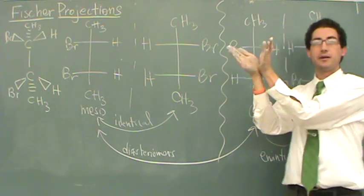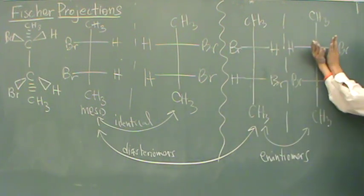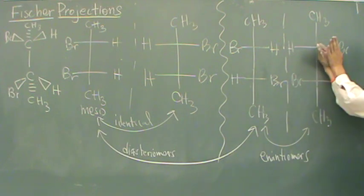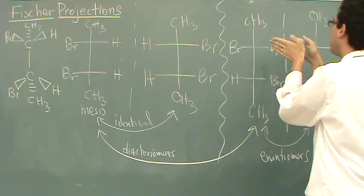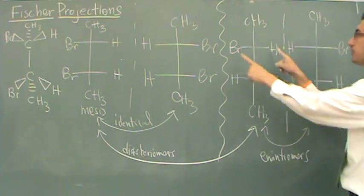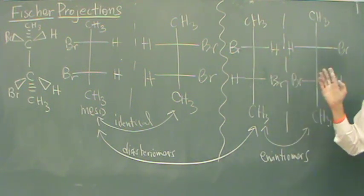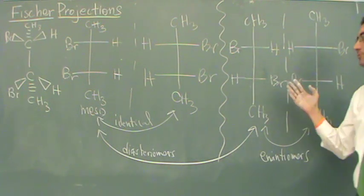So if you flip it like a pancake, they're not going to line up. Because now, this flipped like a pancake would be pointed into the board, where these two are pointed out of the board. So, that's one thing to know about Fischer projections.